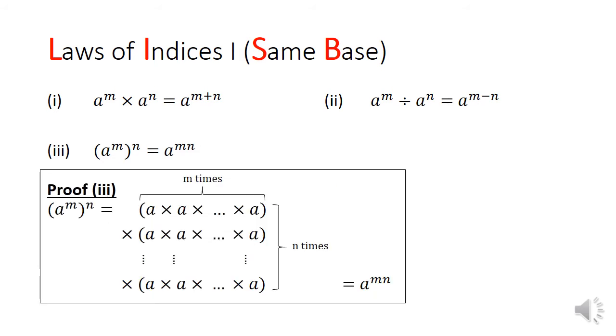In law number 3, a to the power of m to the power of n is equal to a to the power of m times n. What happens is that you are multiplying a to the power of m by itself n times. This results in a rectangular grid of a's, mn of them.